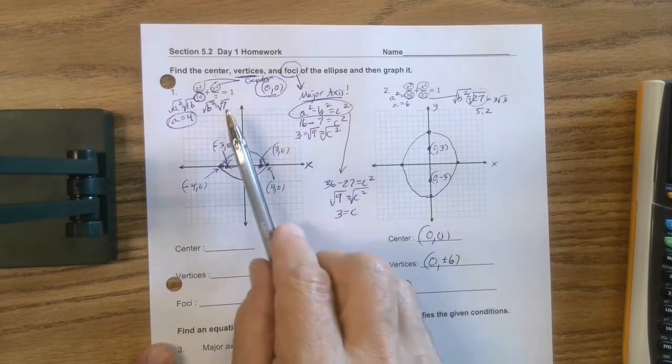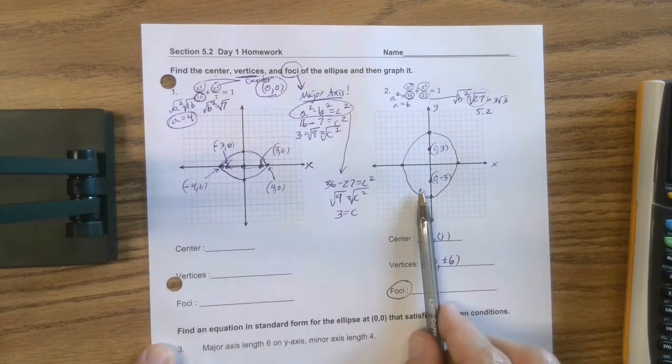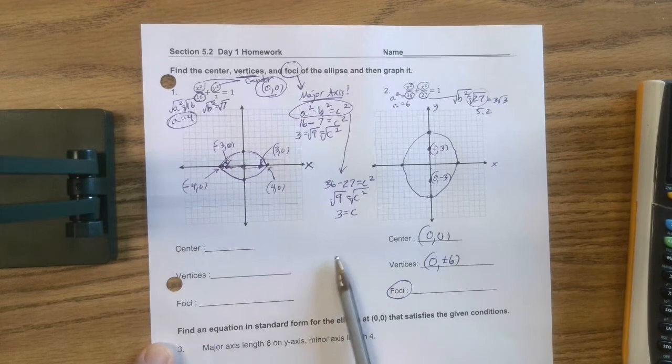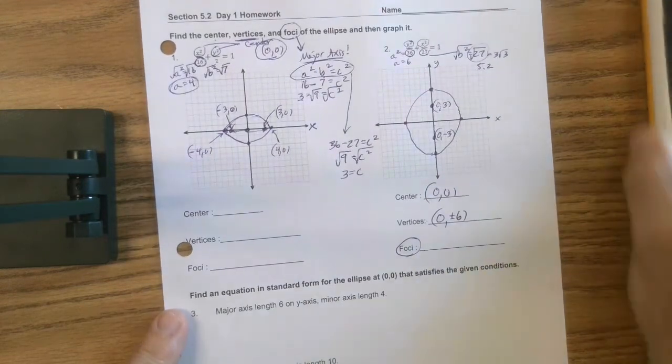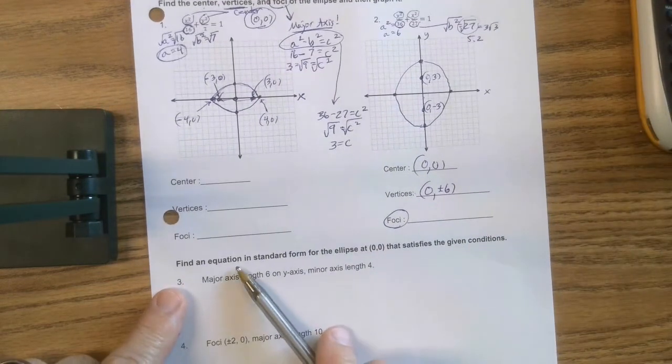So now notice what we're doing. We're going from equation to graph, equation to graph. And we're labeling some things. Now they're going to give us somewhat of a puzzle, give us a picture. And they're asking us to find the equation.